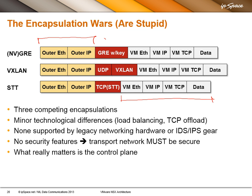The real difference is in the middle. One uses GRE, which we know well from GRE tunnels. Another uses UDP and then a VXLAN header. The third creates a fake TCP header. None of these three are supported by legacy networking hardware, so you cannot just terminate these packets on an existing switch. A few vendors have started supporting VXLAN. You may get something to work with GRE encapsulation, but NVGRE is not yet supported in existing hardware, and STT is not supported in any hardware.